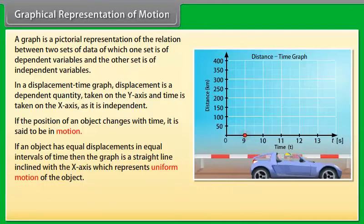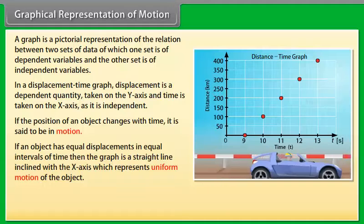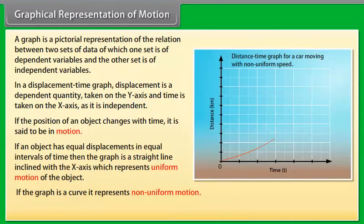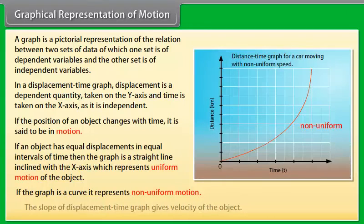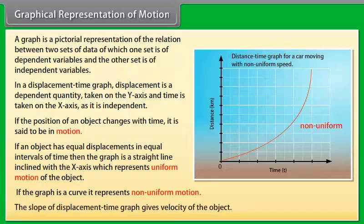displacements in equal intervals of time, then the graph is a straight line inclined with the x-axis which represents uniform motion of the object. If the graph is a curve, it represents non-uniform motion. The slope of a displacement-time graph